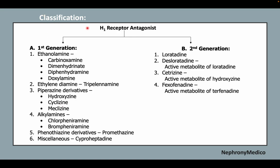Classification of H1 receptor antagonists: first generation and second generation. First generation includes ethanolamines like carbinoxamine, dimenhydrinate, diphenhydramine, doxylamine, and ethylamines like tripelennamine.